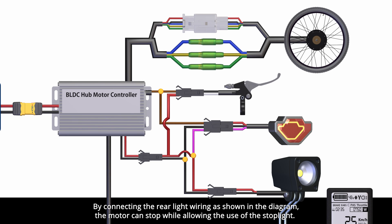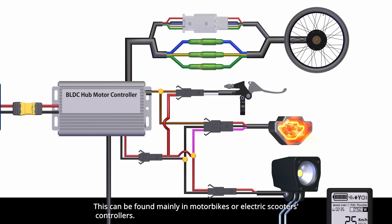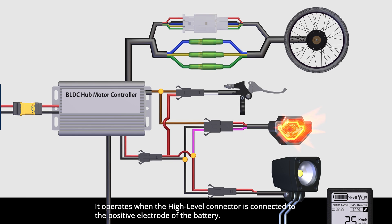By connecting the rear light wiring as shown in the diagram, the motor can stop while allowing the use of the stoplight. This can be found mainly in motorbike or electric scooter controllers. It operates when the high-level connector is connected to the positive electrode of the battery.